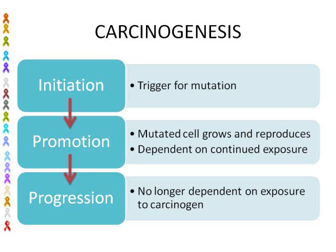Carcinogenesis — how does cancer come about? How does it take root? The first step is initiation: the initial contact with the carcinogen, sometimes called the promoter. It's the trigger for the mutation to start. Then you move to the promotion stage, where the carcinogen is still in the environment. The mutated cells grow and reproduce, but they are still dependent on continued exposure to the promoter — the carcinogen.